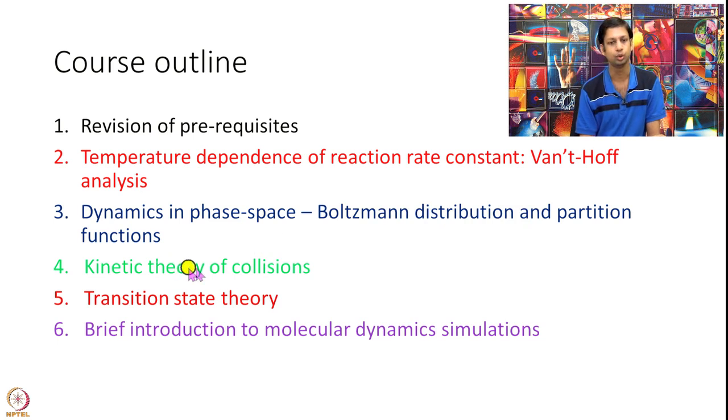Then we will discuss the collision theory, kinetic theory of collisions. That is the first theory that was given by Trotz and Lewis to calculate rate constant from atomistic picture.